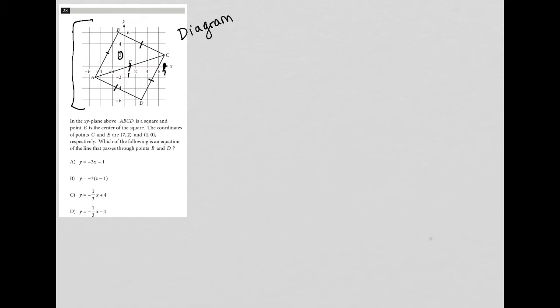Respectively, which of the following is an equation of the line that passes through the points B and D? Well, B looks like that's going to be negative 1, 6. And D is here, that looks like that's going to be 3, negative 6. So we want the equation of the line that passes through points B and D.